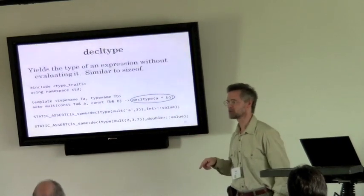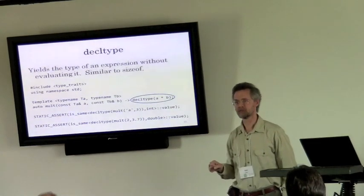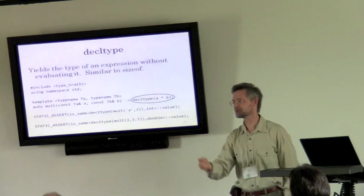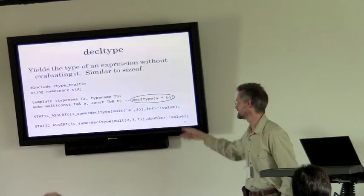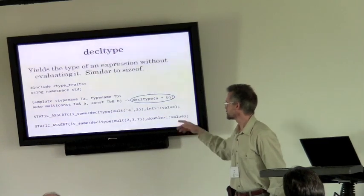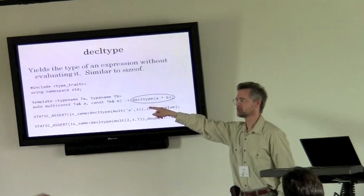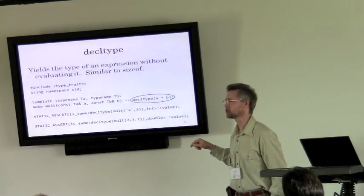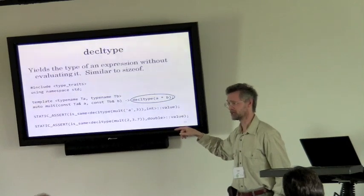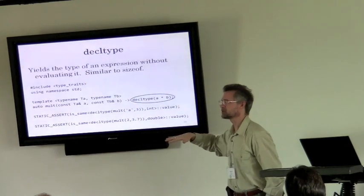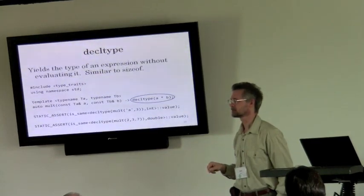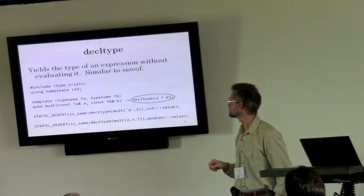Lior covered the trailing return / arrow syntax. The trailing return is used so that if you put decltype in front of 'mult', it doesn't know that a and b are in scope yet. In some cases, the trailing return is also easier to read. In the case of multiplication, you don't necessarily know what the type is going to be — imagine matrix multiplication, where the result type may not be either type A or type B.